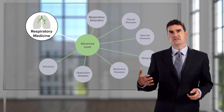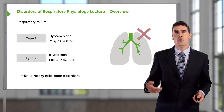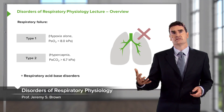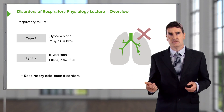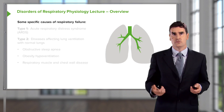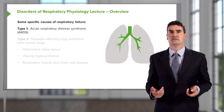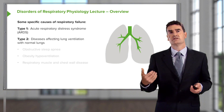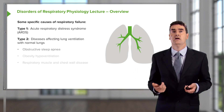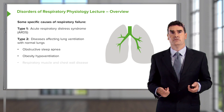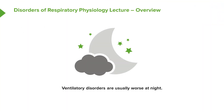The subject of this lecture is respiratory physiology disorders. We're going to talk about type 1 and type 2 respiratory failure, the differences between them and how they should be treated, respiratory acid-base disorders, adult respiratory distress syndrome (ARDS), and causes of type 2 respiratory failure such as obstructive sleep apnea, obesity hypoventilation, and chest wall and muscle disease. An important point is that ventilatory diseases causing chronic respiratory failure are usually worse at night, with worse physiological parameters overnight and first thing in the morning.